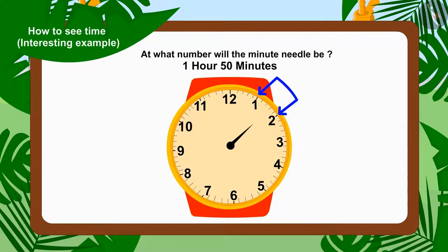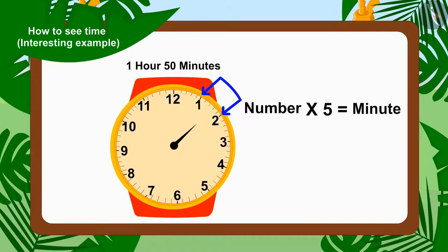And at what number will the minute needle be to show 50 minutes? This is very easy as we multiply the number on the clock by 5 to find the time in minutes. To find out what number the needle points to, we have to reverse it. That is, minutes divided by 5.